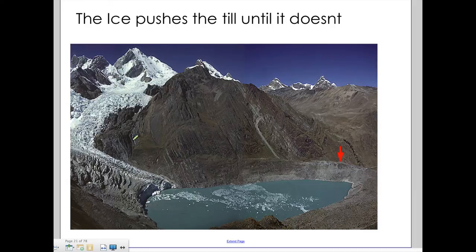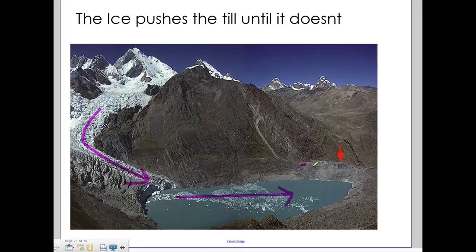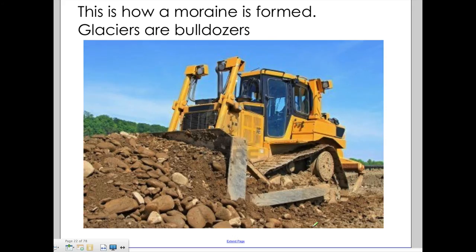Glaciers work just like bulldozers — they only push. They push and push until they back up, and the big pile remains behind. You can spot the moraine where the glacier used to reach, forming this big pile of sediment.